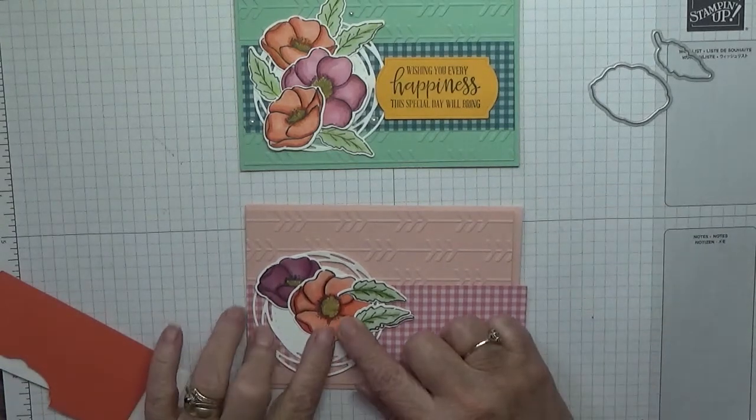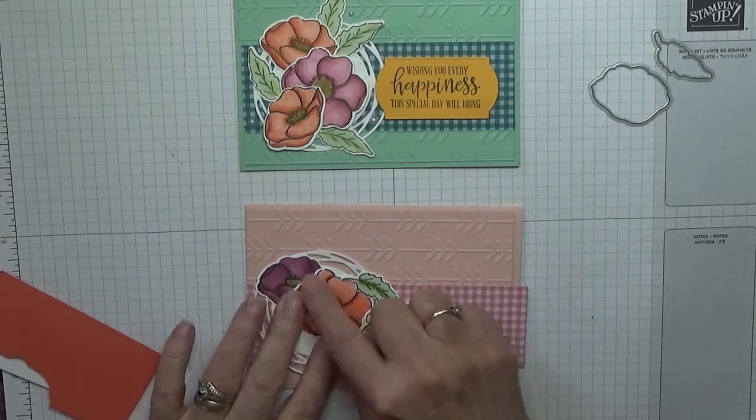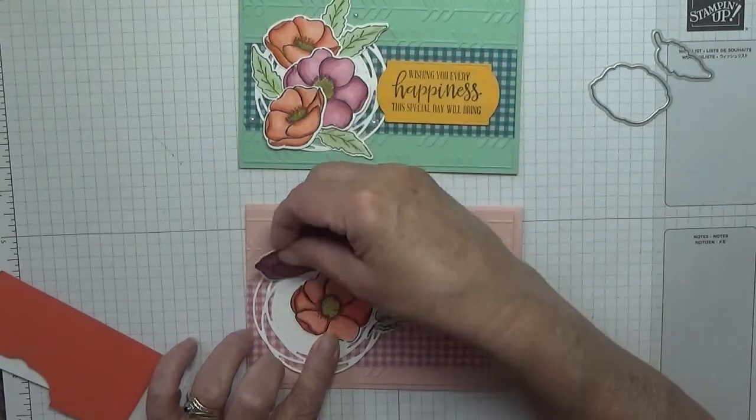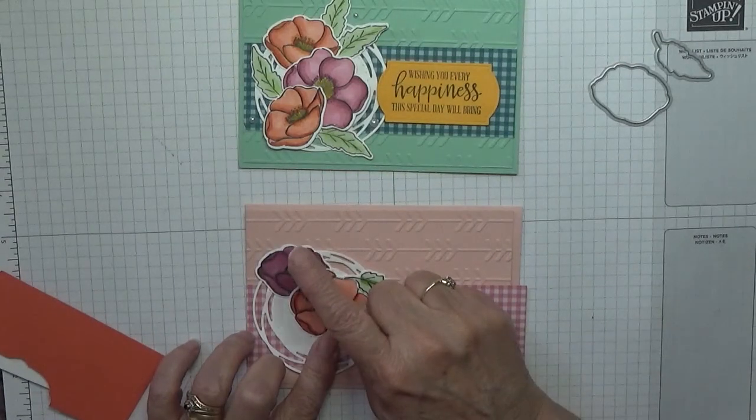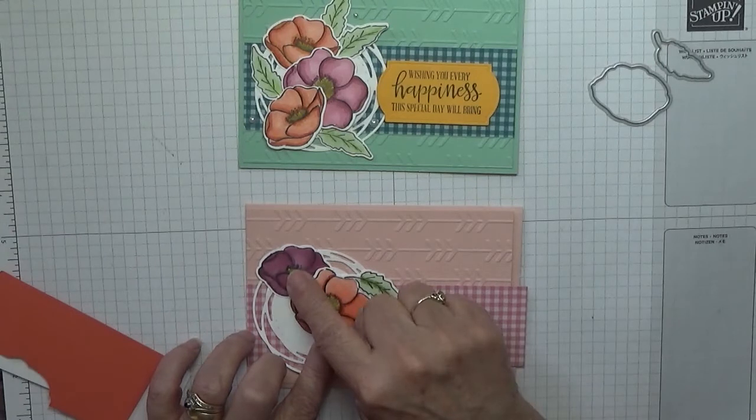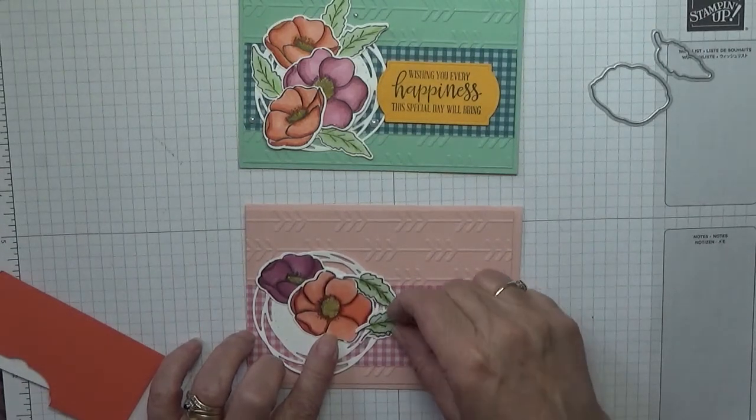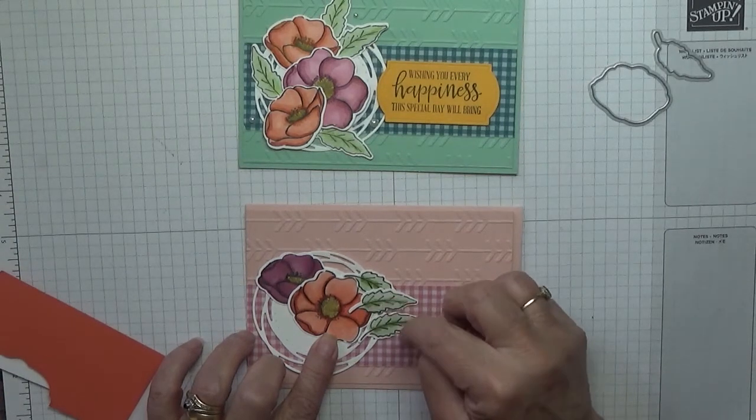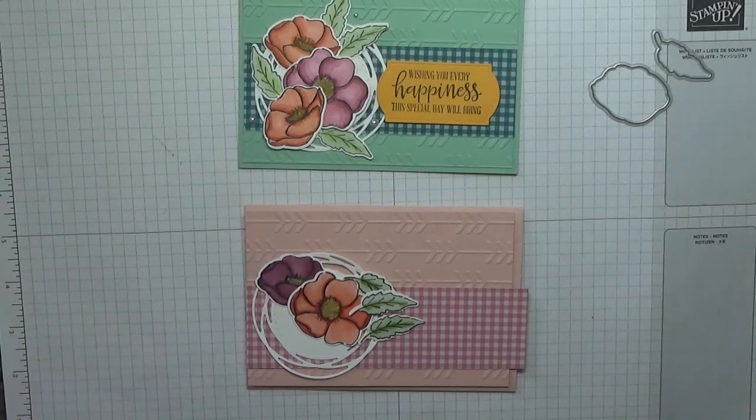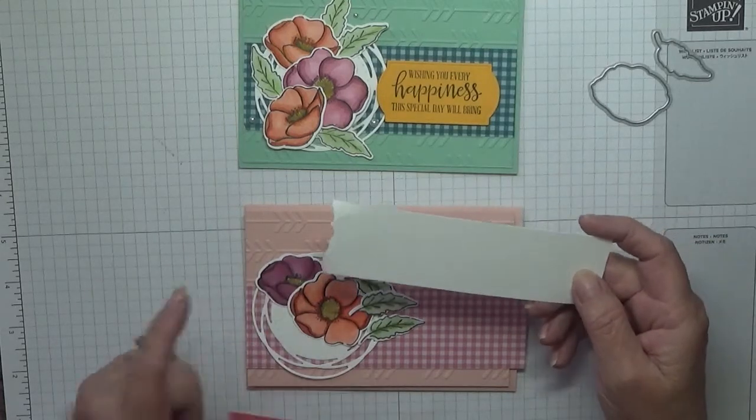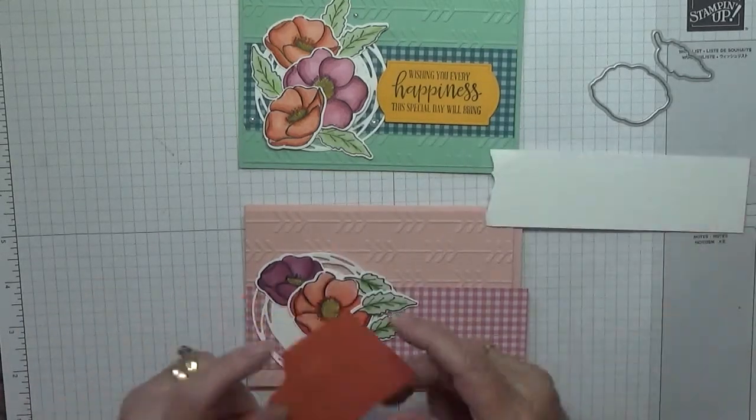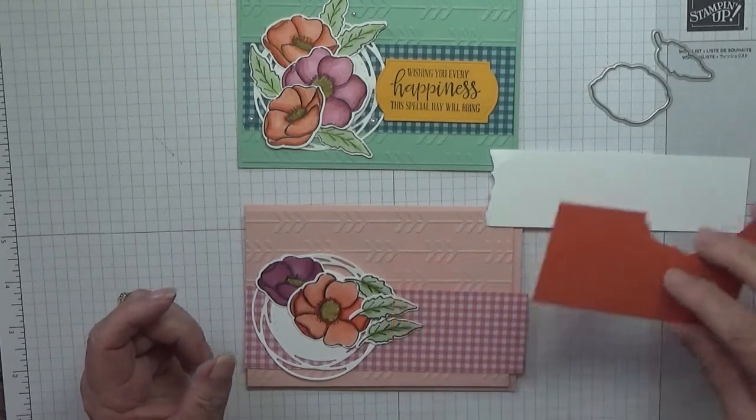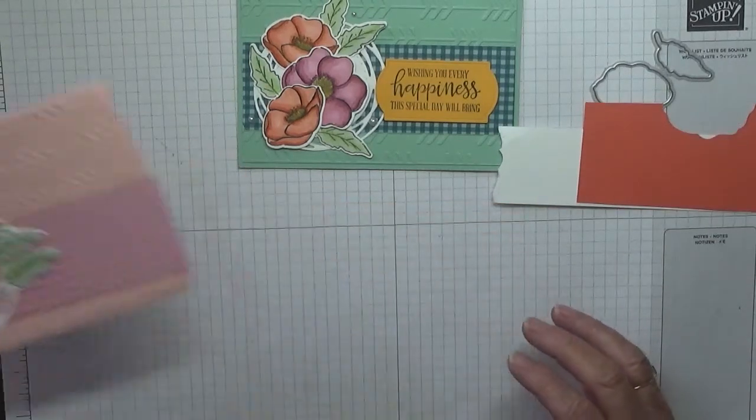These poppies have colored this one in Calypso Coral and this one in between Rococo Rose and Rich Razzleberry I used on that one. And then the leaves are colored in in Soft Sea Foam and a bit of Granny Apple Green. I've also got a scrap of white to stamp a flower and a poppy, and I've also got some Calypso Coral scrap for the sentiment which I'm going to pop there.